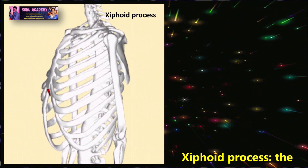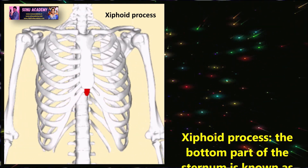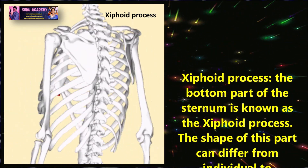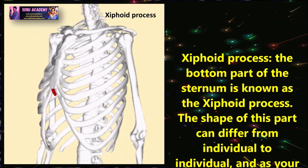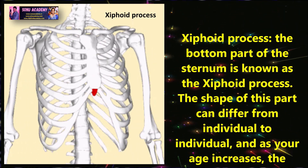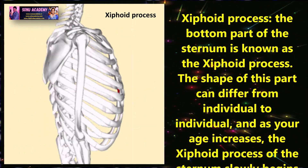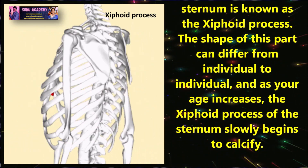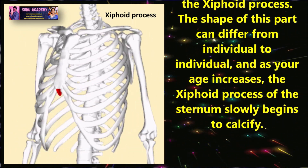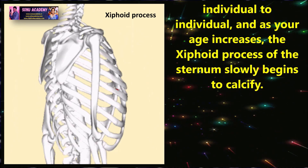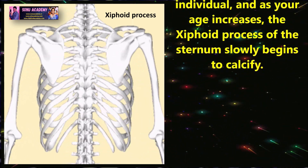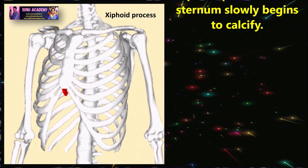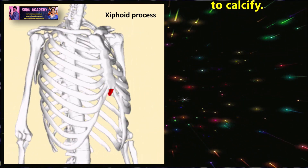The xiphoid process is the bottom part of the sternum. The shape of this part can differ from individual to individual, and as your age increases, the xiphoid process of the sternum slowly begins to calcify.